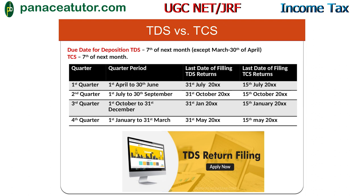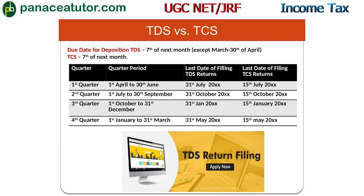Regarding return filing: TDS returns are filed quarterly to pass credit to the deductee. Quarter 1 (1st April to 30th June): last date for TDS return is 15th July. Quarter 2 (1st July to 30th September): last date for TDS return is 31st October; last date for TCS return is 15th October. Quarter 3 (1st October to 31st December): last date for TDS return is 31st January; last date for TCS return is 15th January.